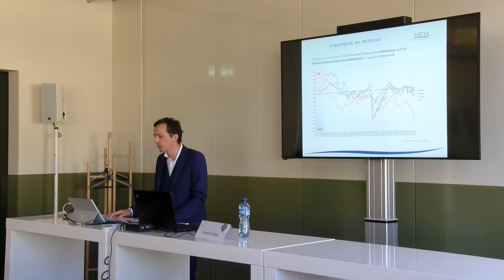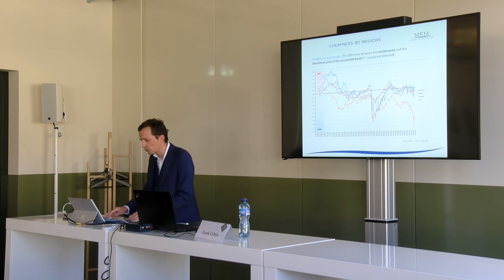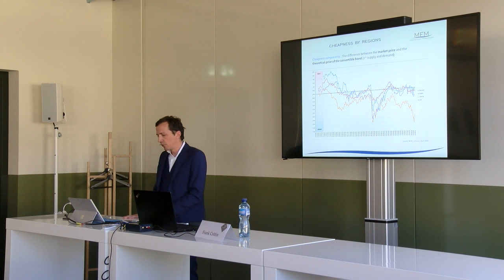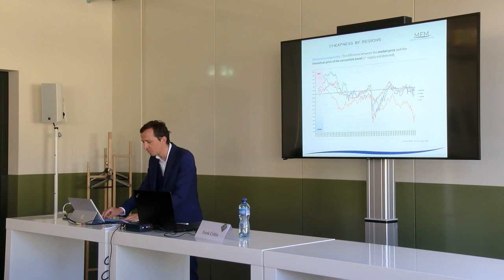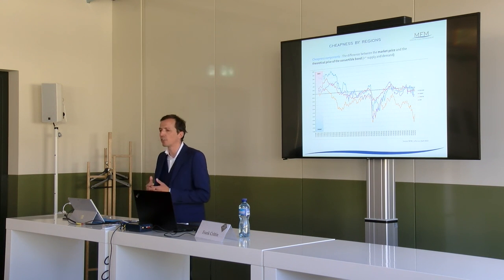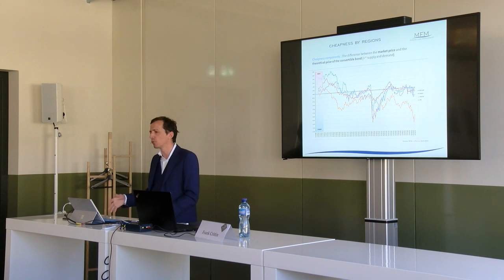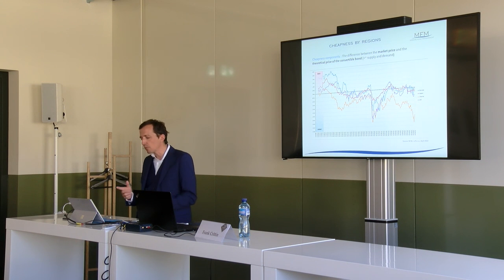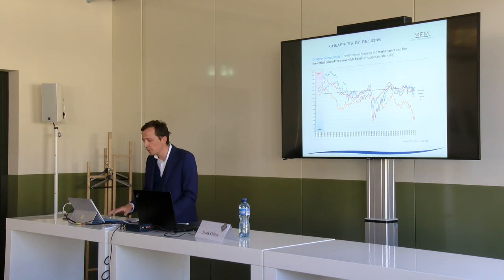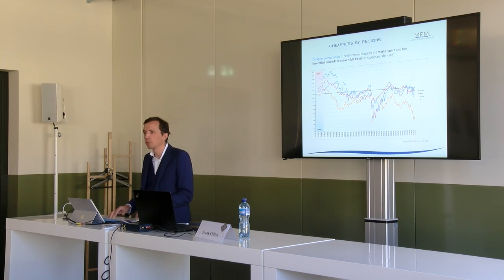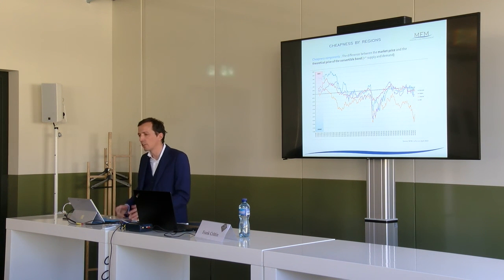Here you have the cheapness by region, computed using Jefferies' assumptions. The orange line — Asia's cheapness — has always been cheaper than the rest of the world. This is because most US arbitrageurs find it more difficult to hedge positions in Asia, generating less demand for those converts and therefore a much stronger cheapness. By contrast, the US, shown in purple, stays near zero — around fair theoretical value — because arbitrage happens much faster there.